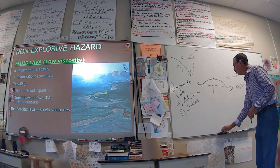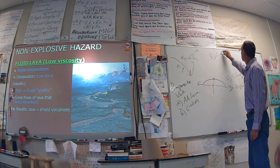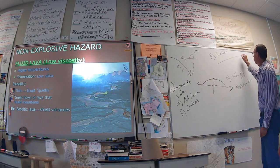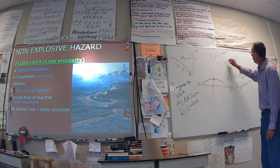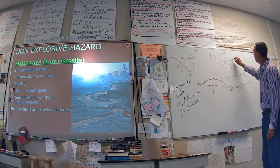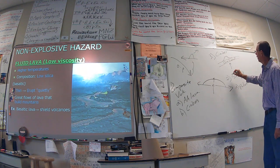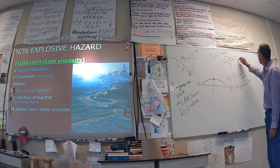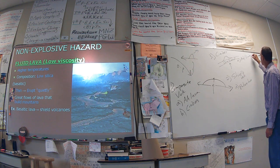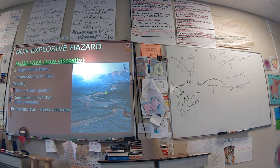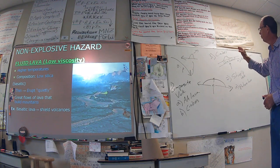The third volcano you can get is something called a cinder volcano. You almost always get these in intraplate settings — in other words, if you have a hot spot coming up underneath a continent, you'll get a cinder volcano. It's just 90% ash or cinder. These are the smallest volcanoes. So you've got composite, you've got shield, you've got cinder.